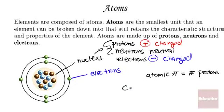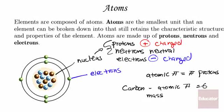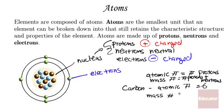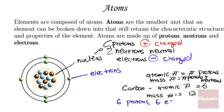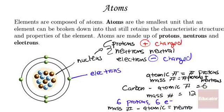Let's look at carbon as an example. Carbon has an atomic number of six. A second number associated with an element is its mass number. The atomic number is the number of protons; the mass number is the number of protons plus the number of neutrons. The mass number of carbon is 12. If carbon is neutral, I can determine I have six protons from the atomic number, and since it's neutral, I also have six electrons. To figure out the number of neutrons, I take the mass number and subtract the atomic number: 12 minus 6 gives six neutrons.